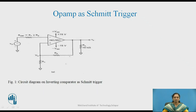Look at the circuit, which is an inverting comparator — nothing but a Schmitt Trigger — where resistor R_OM is used to minimise the offset voltage at the output. R_OM can be the parallel combination of R1 and R2, which is connected in series with the input signal source to the inverting terminal of the OPAMP.